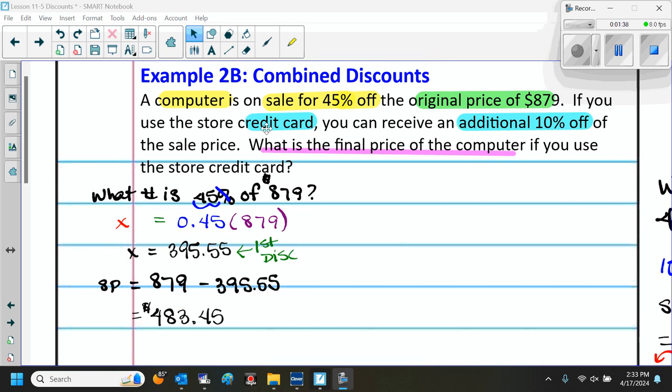Now if we're going to use the credit card, they're going to give us an additional 10% off. So we want to know what now is 10% off of this amount, $483. What number is 10% of $483? We can do the same thing we did here, write an equation and then simplify it, or we can use the percent proportion and then cross-multiply to get that amount.